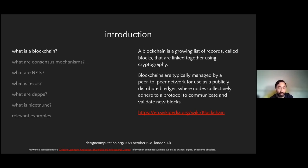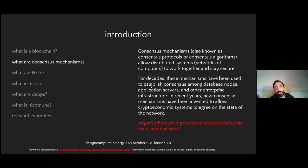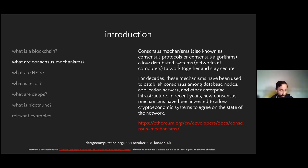Some people refer to it as a distributed ledger, where nodes collectively adhere to some protocol and communicate to validate new blocks. In order for all the nodes in the network to agree on the state of the blockchain, there are mechanisms called consensus mechanisms. These are algorithms or protocols that allow the whole distributed system to eventually agree upon the current state of the blockchain. One validator node might have validated a series of transactions, and the rest of the network has to agree about that.